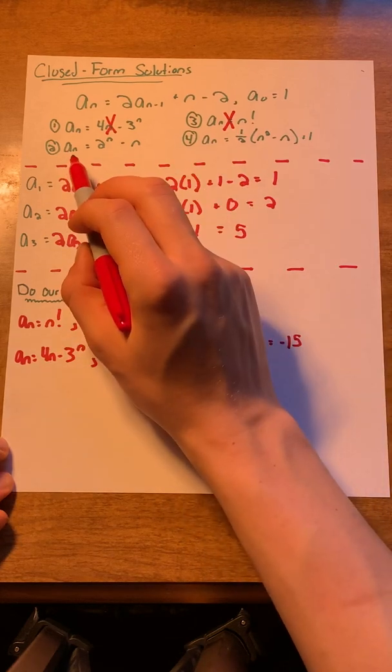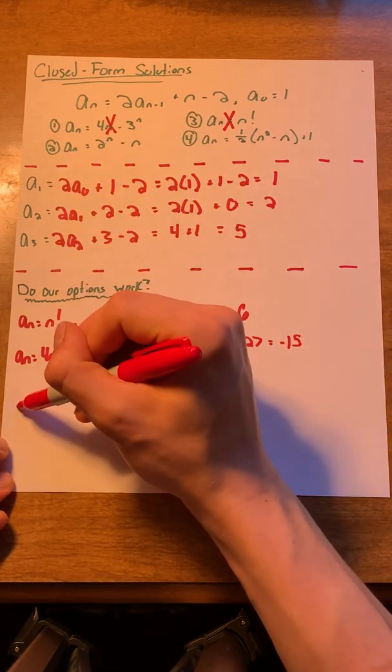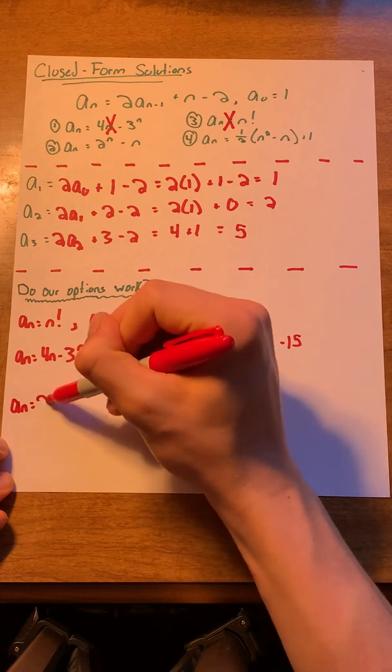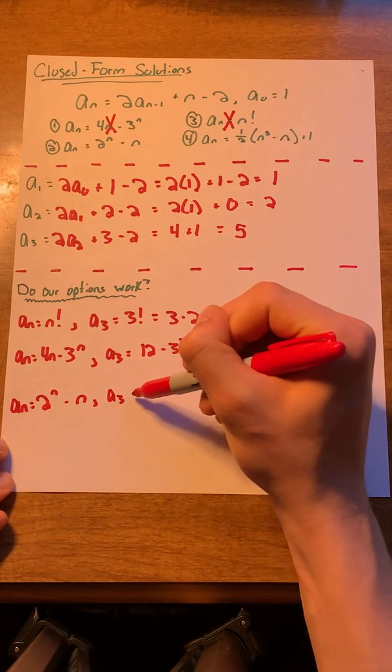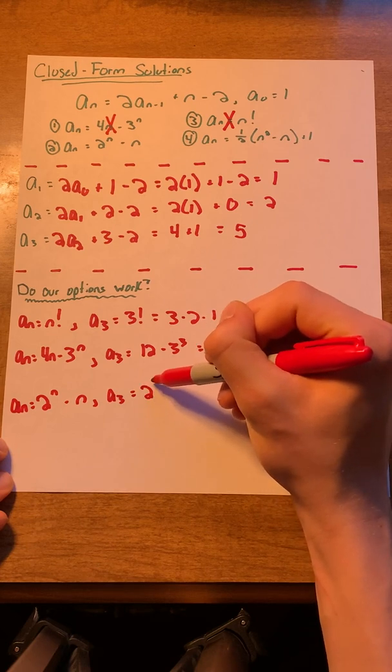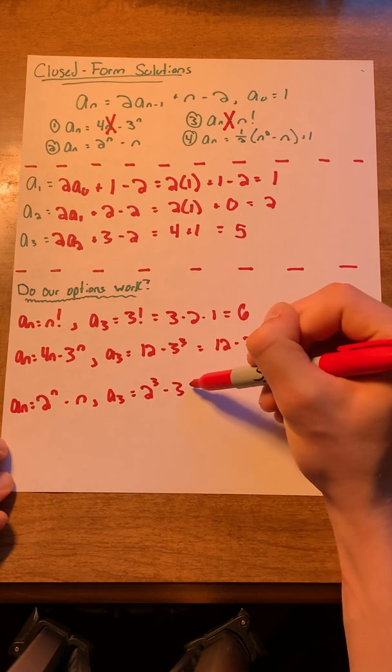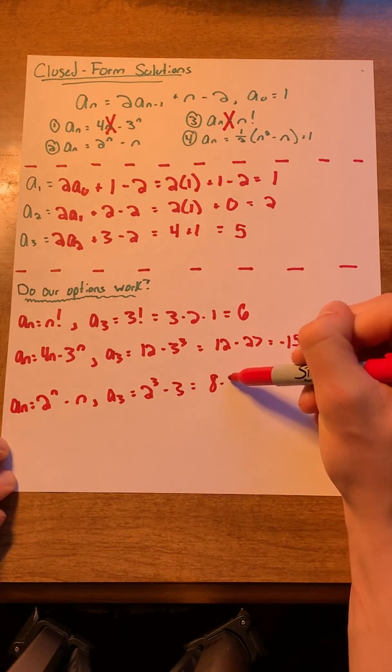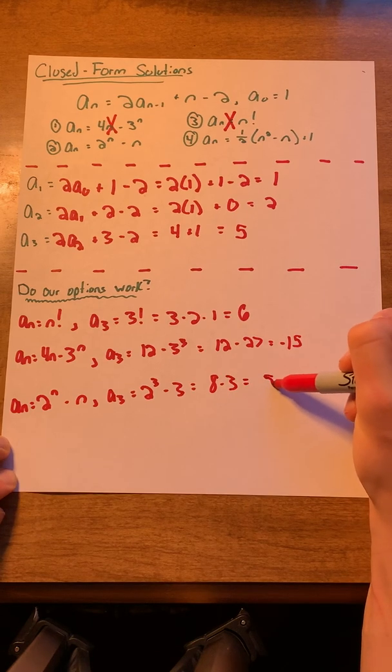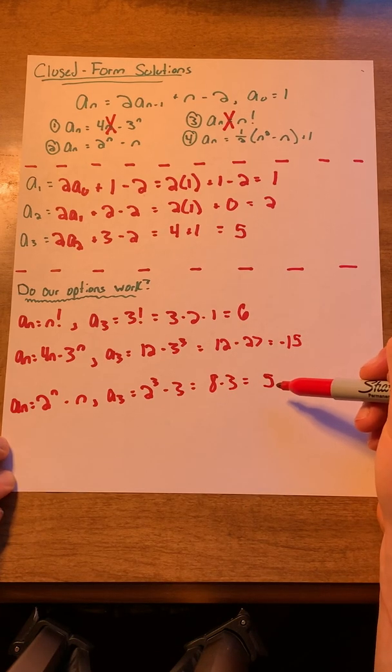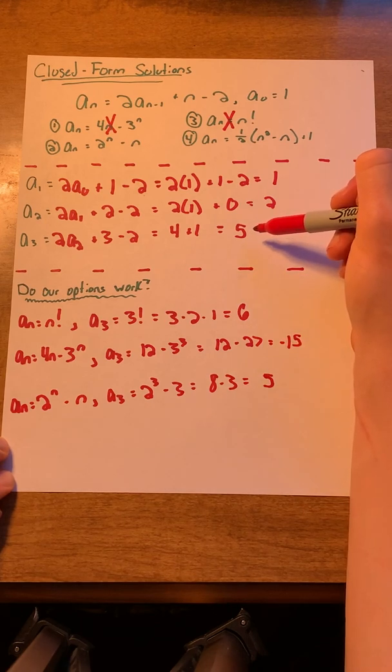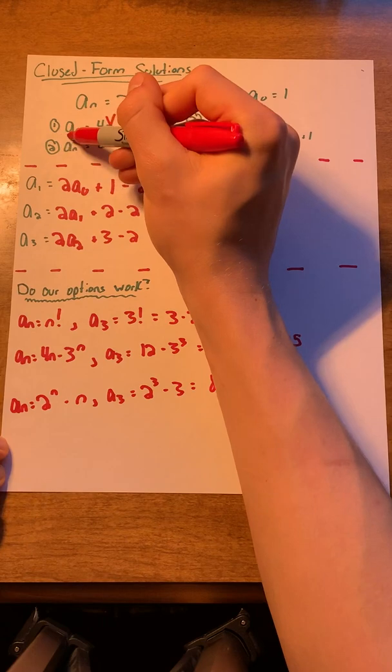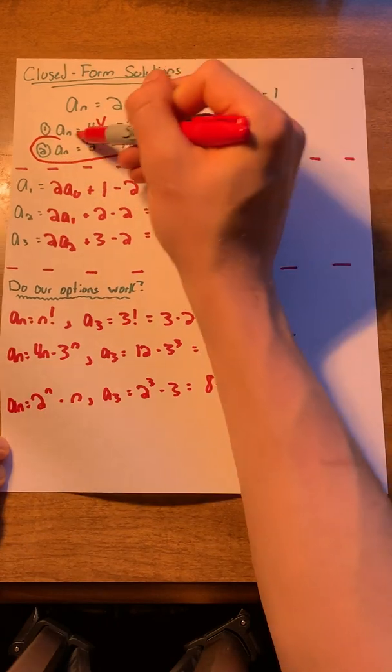Now, let's try a of n equals 2 to the n minus n. With a of 3, we'll end up getting 2 cubed minus 3, which equals 8 minus 3, which equals 5. Here, we see that we got the same solution as we got when we just did the recurrence relation out step by step. This means that this must be our correct closed form solution.